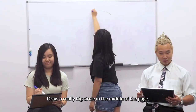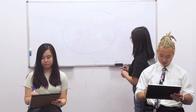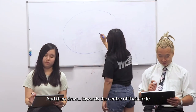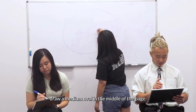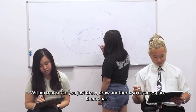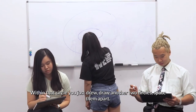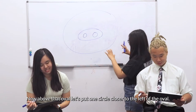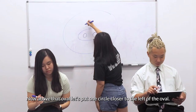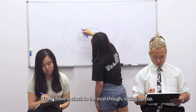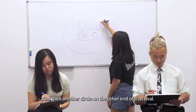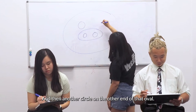Draw a really big circle in the middle of the page. Then draw a medium oval in the middle of the page. Within that circle you just drew, draw another two circles, spaced apart. Now above that oval, let's put one circle closer to the left of the oval — not stuck to the oval, sitting up top. And then another circle on the other end of that oval.